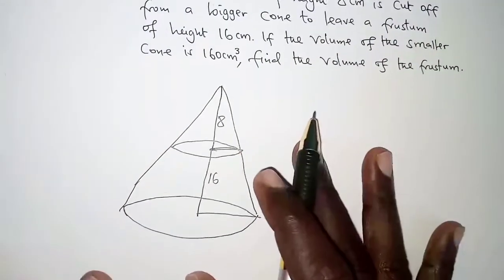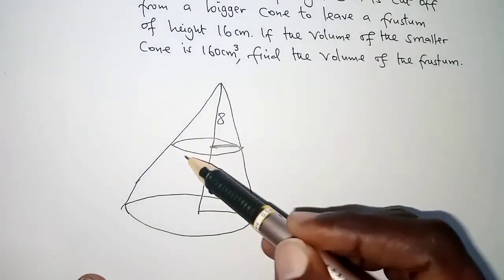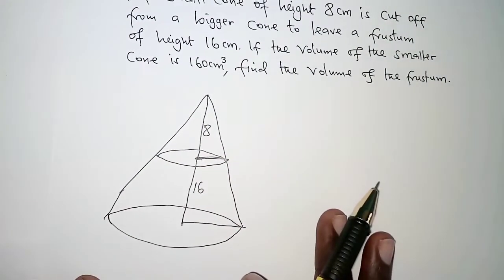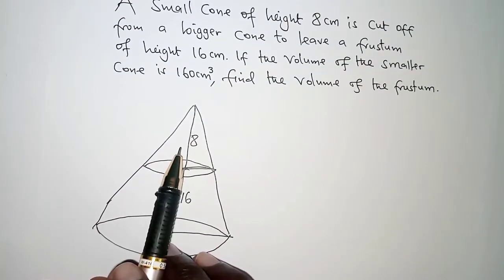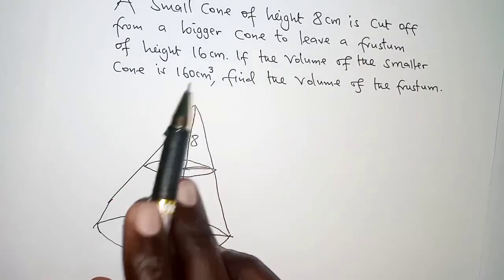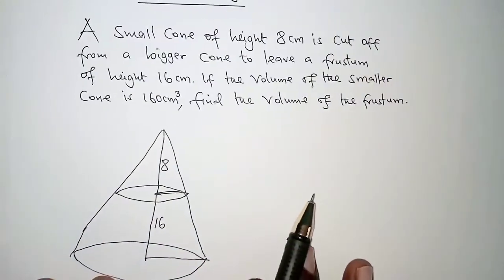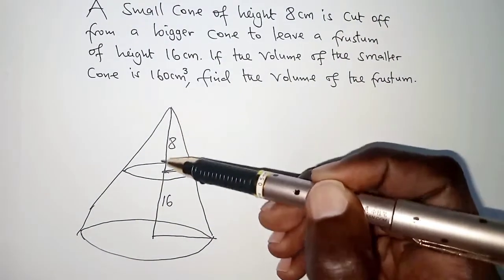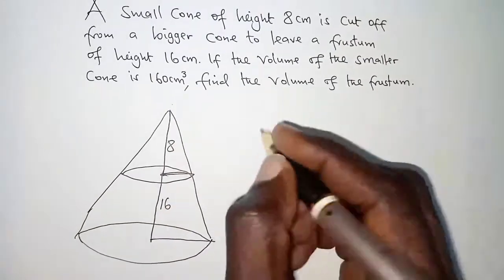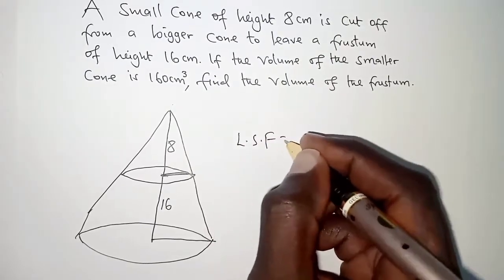We are required to find the volume of the frustum, which we obtain by having the volume of the bigger cone minus the volume of the smaller cone that was cut off. The volume of the smaller cone is 160 cubic centimeters, and we do not know the volume of the bigger cone. We are going to apply similarity using the heights. The height of the bigger cone is obtained by adding 8 to 16.